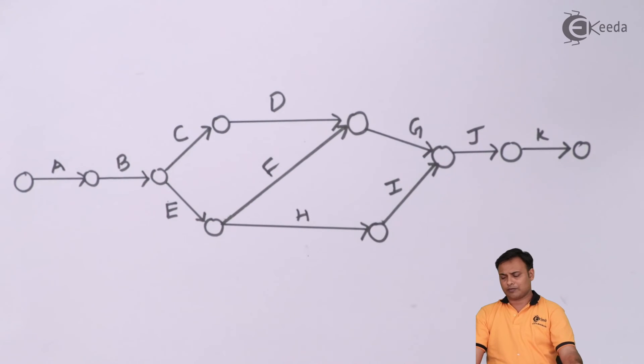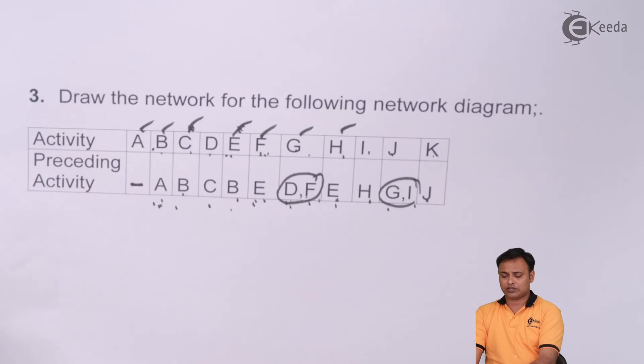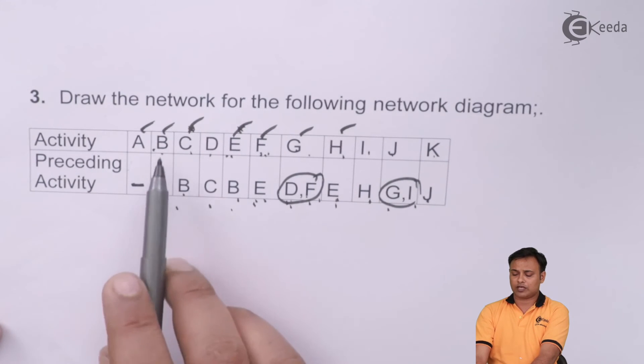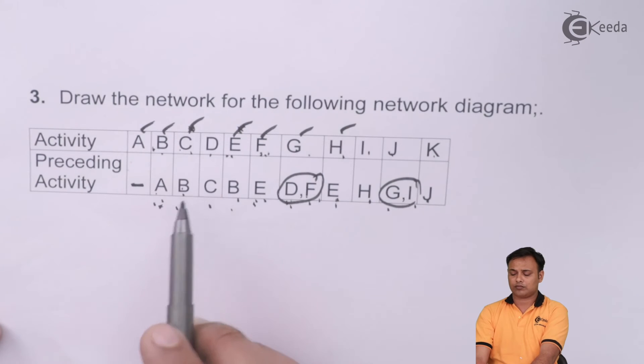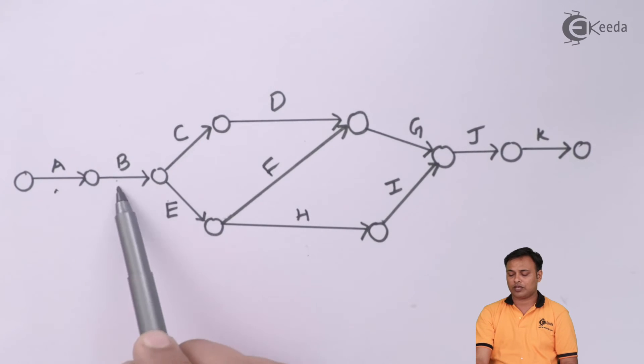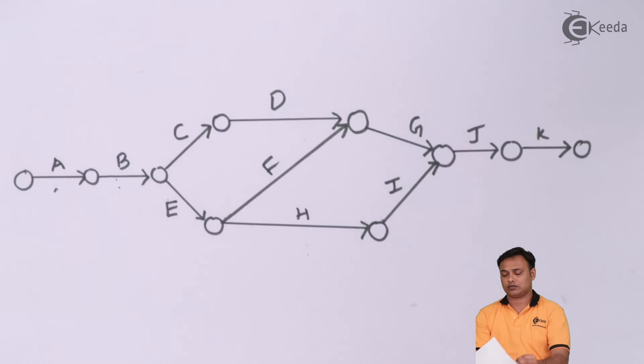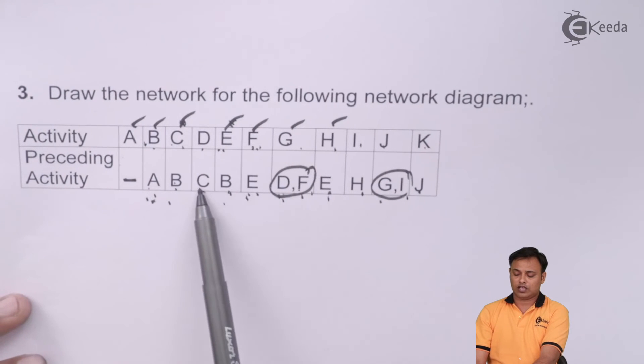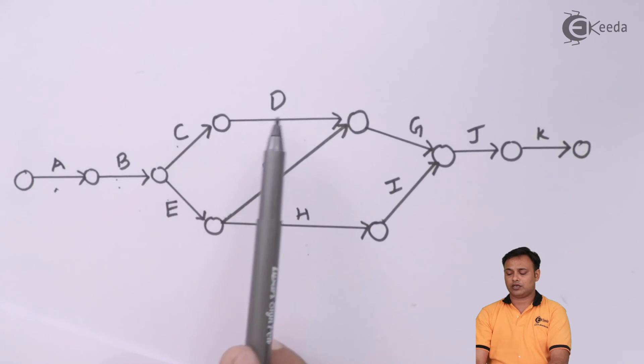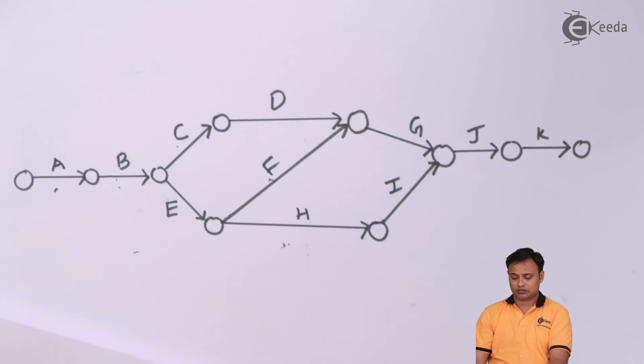You need to check the diagram again. Always it is beneficial to check the diagram for the connections. A is the initial, A ke baad B, B ke baad C, B ke baad E. C ke baad D, E ke baad F and E ke baad H. E ke baad H, E ke baad F.